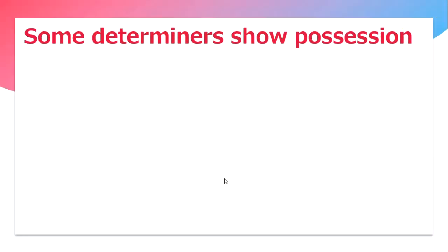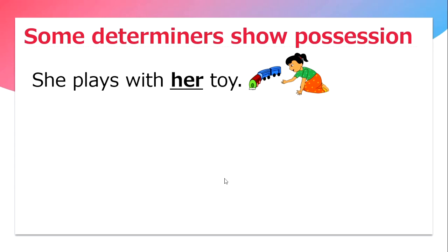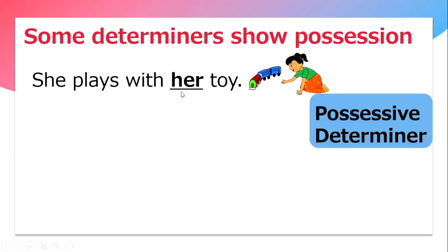Now, there are a few determiners that show possession. For example, she plays with her toy. Here, 'her' is showing possession and it is a possessive determiner.